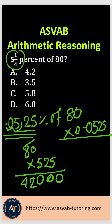Now you have to bring the decimal back in. After the decimal, how many digits do you have? We have 1, 2, 3, 4. So you have to move 4 decimal places from right to left — 1, 2, 3, 4. That gives you 4.2, which is option A.